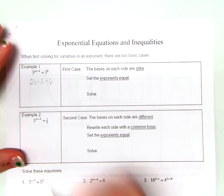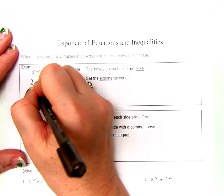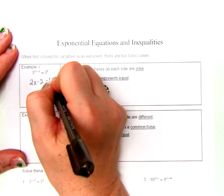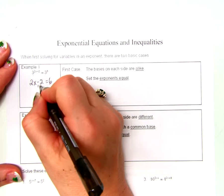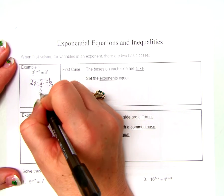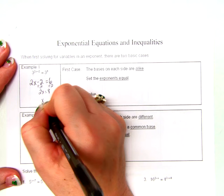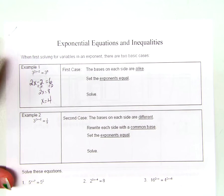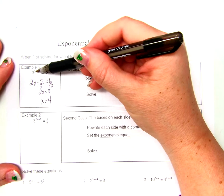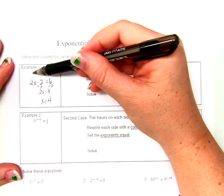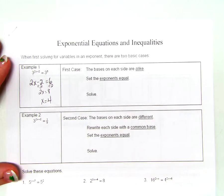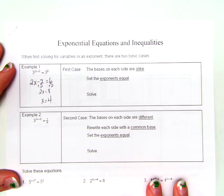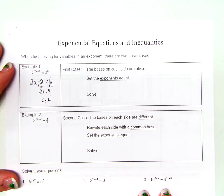So 2x minus 2 equals 6. How do I solve for x now? That's easy — add 2 to both sides: 2x equals 8, so x equals 4. Is it true? 2 times 4 is 8, minus 2 is 6 — does 3 to the 6th equal 3 to the 6th? Yes. Example number 1, I had like bases. Example number 2, I don't.